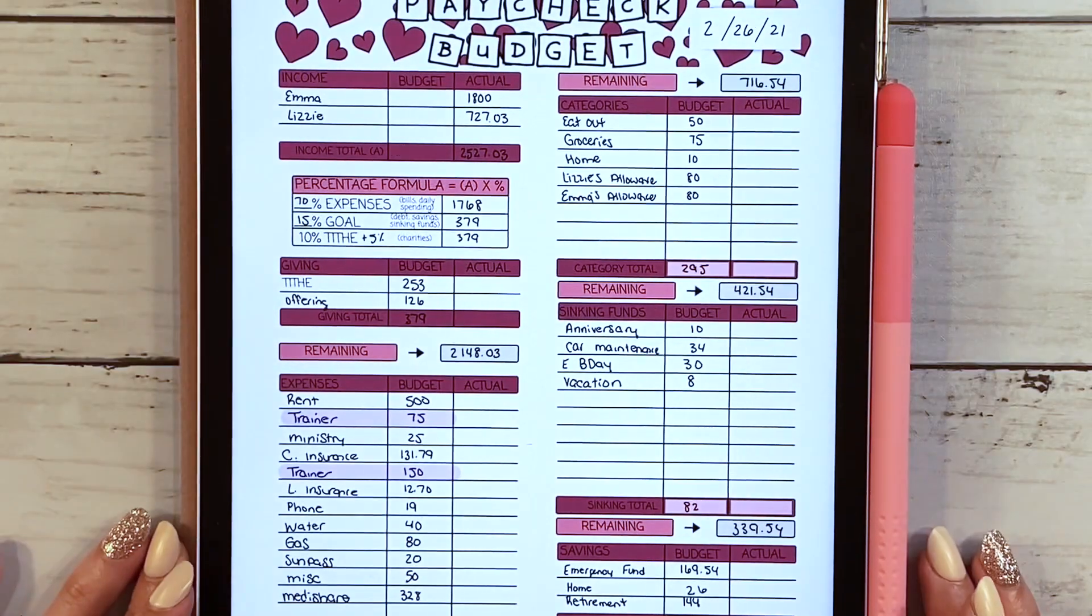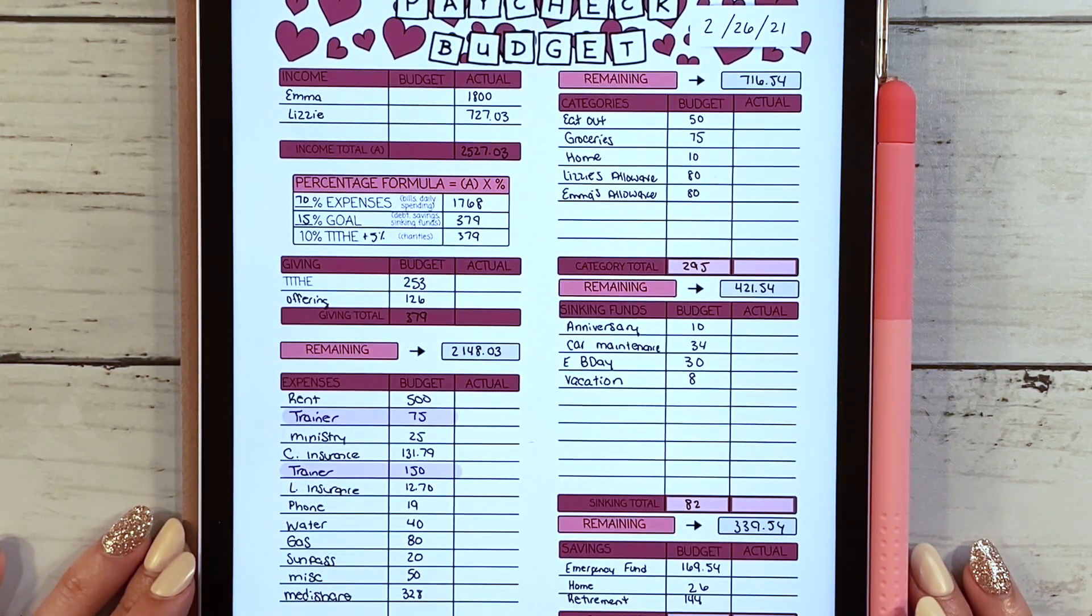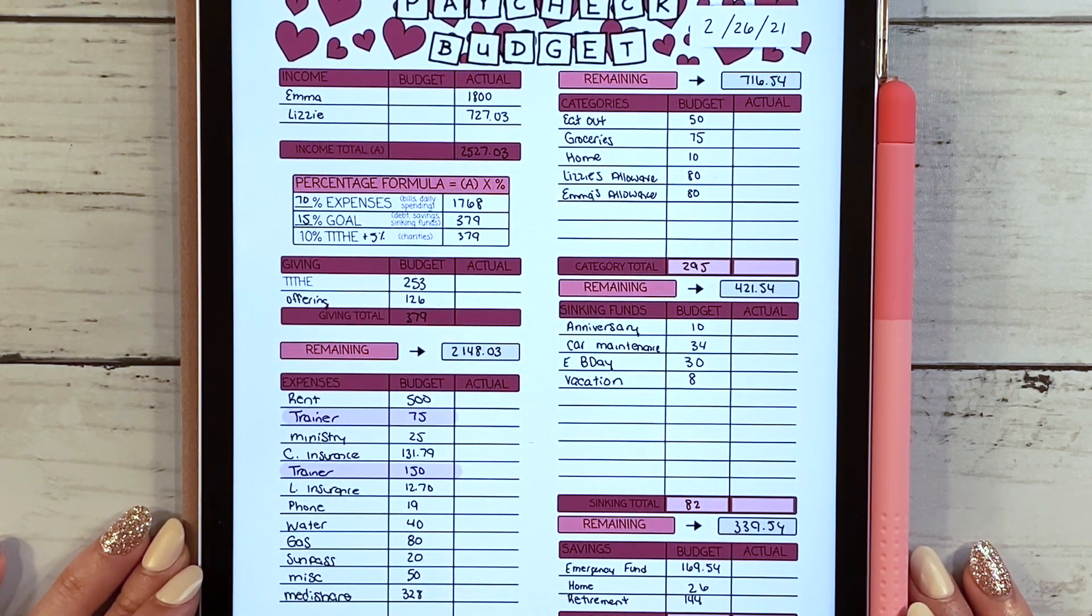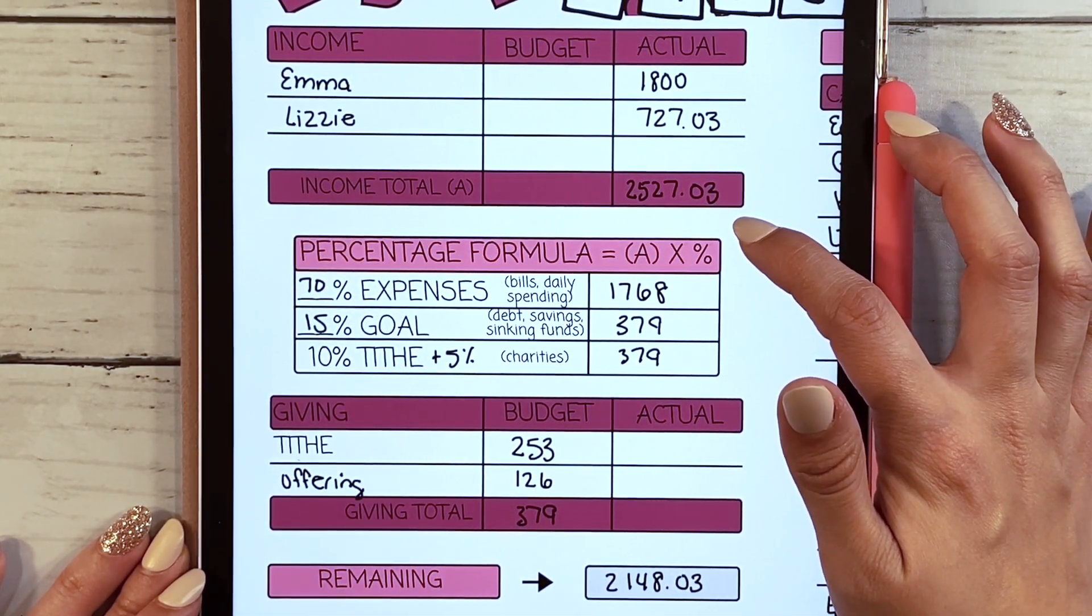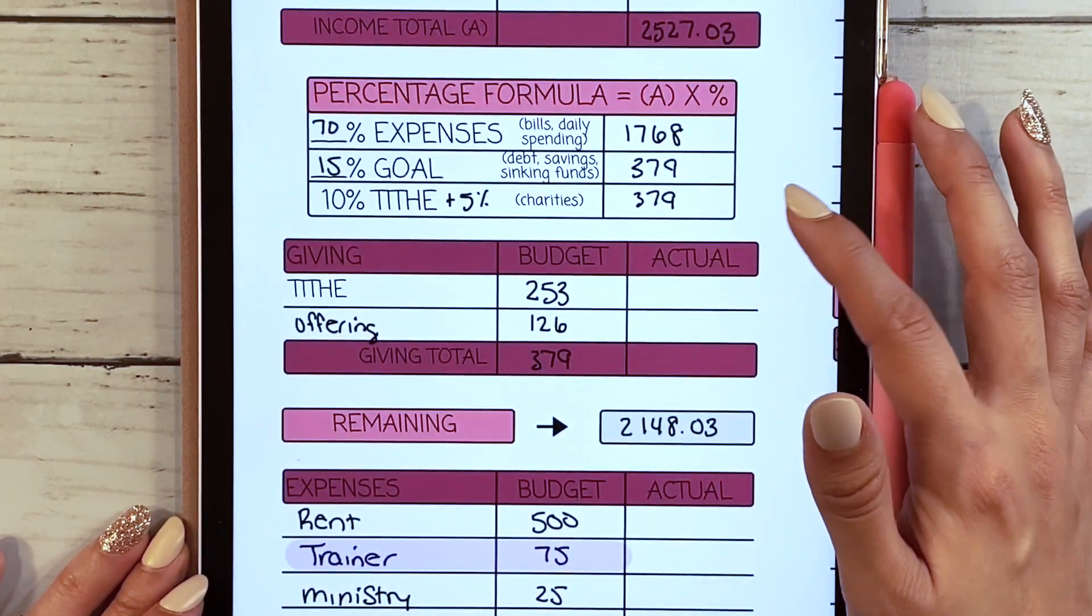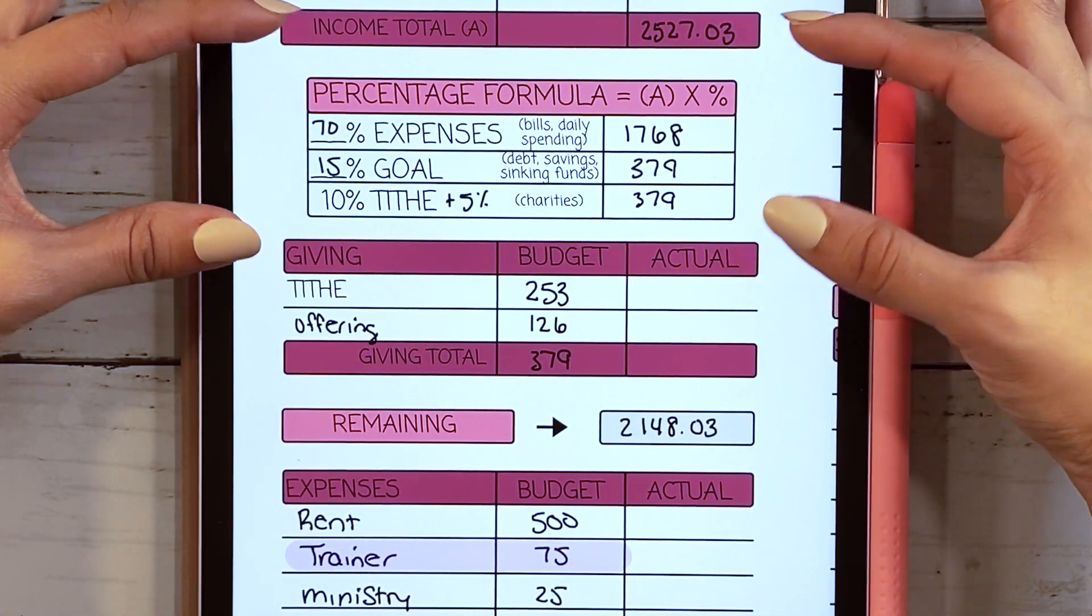This is pretty much step number one: figure out your bill tracker, break it down, and it allows you to easily complete your paycheck budget so you're not super overwhelmed. This is the last paycheck of February as I mentioned, and our total income came out to be $2,705.03.